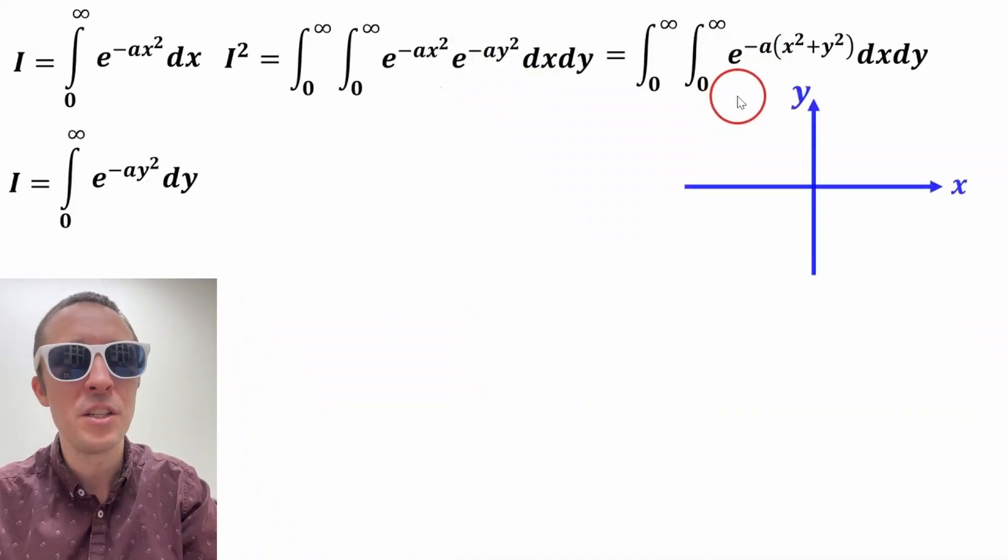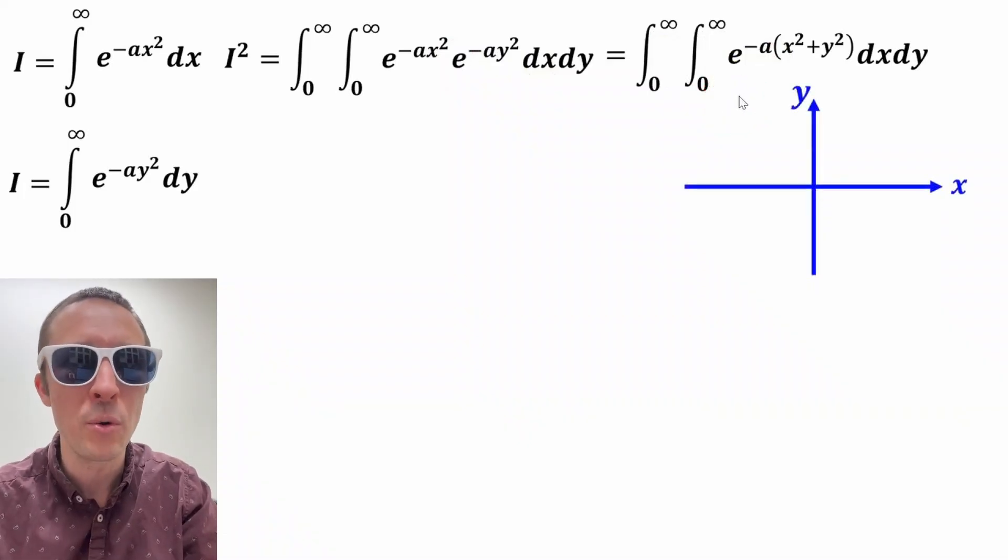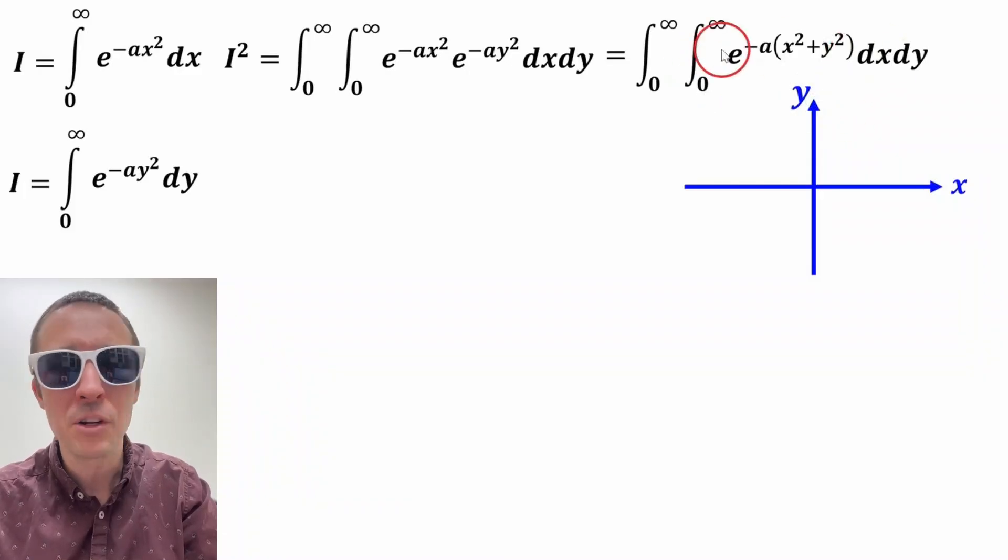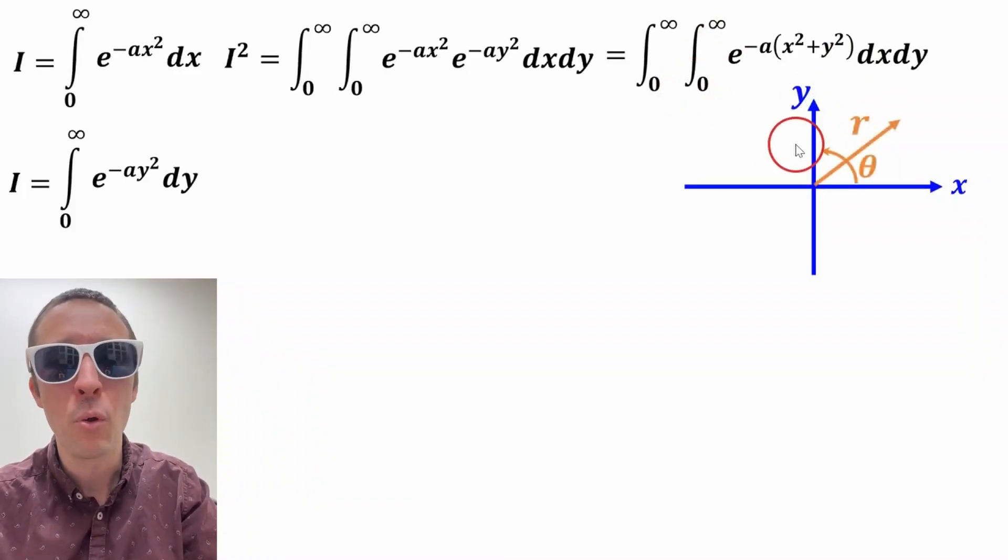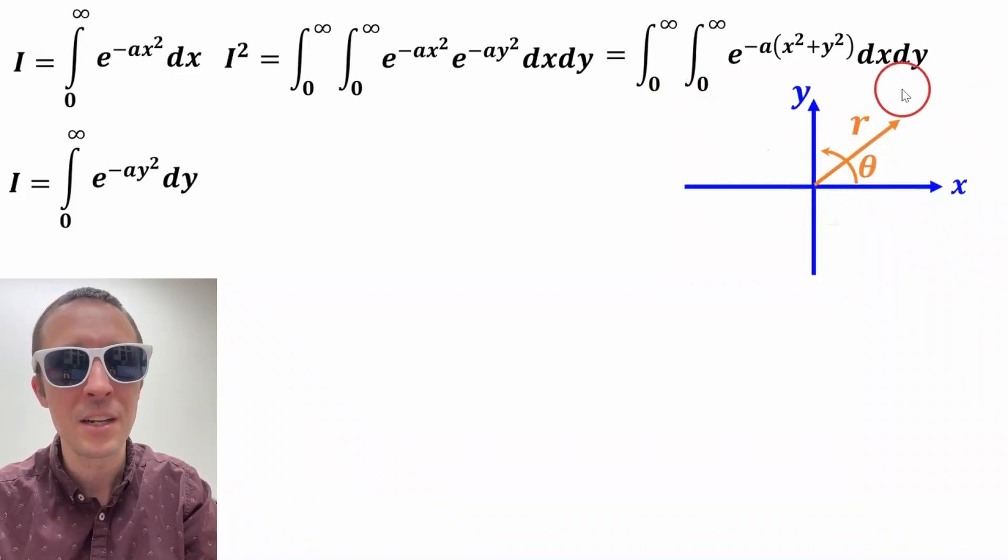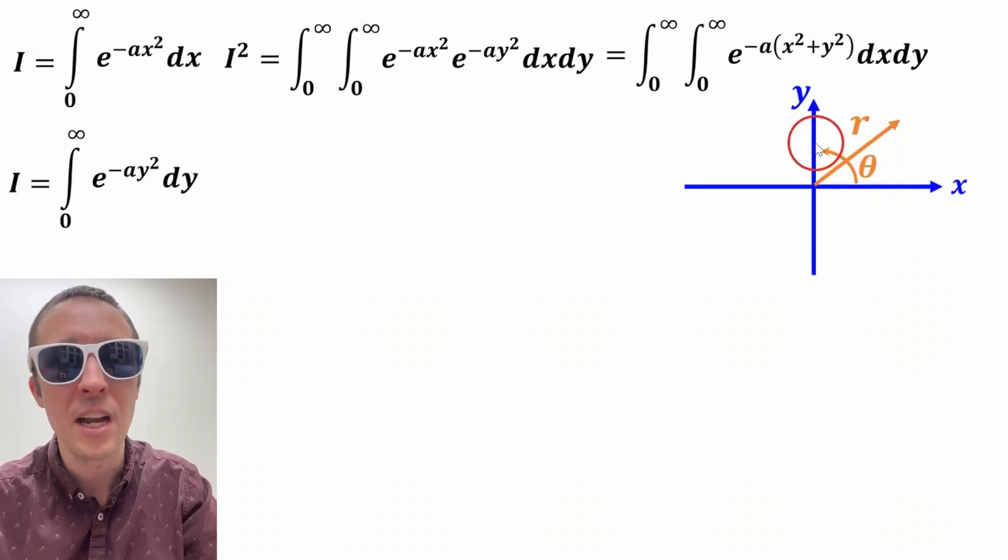Now at this point, we're going to convert into polar coordinates. And I won't go in detail on how to do that, but essentially x and y go from zero to infinity, right? So in polar coordinates, r is going to go from zero to infinity because we're in this first quadrant here, and theta has to go from zero to pi over two, which is 90 degrees.